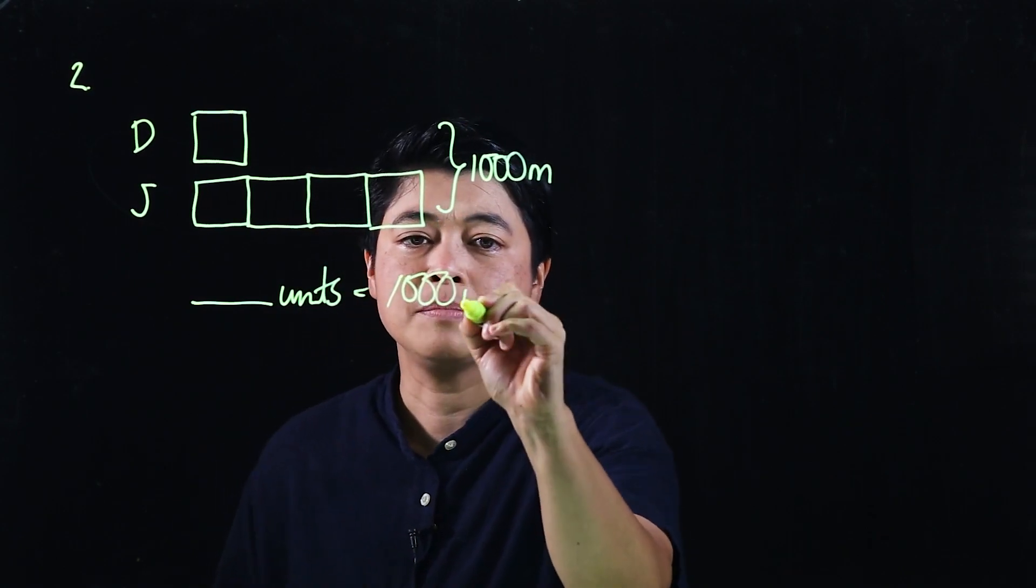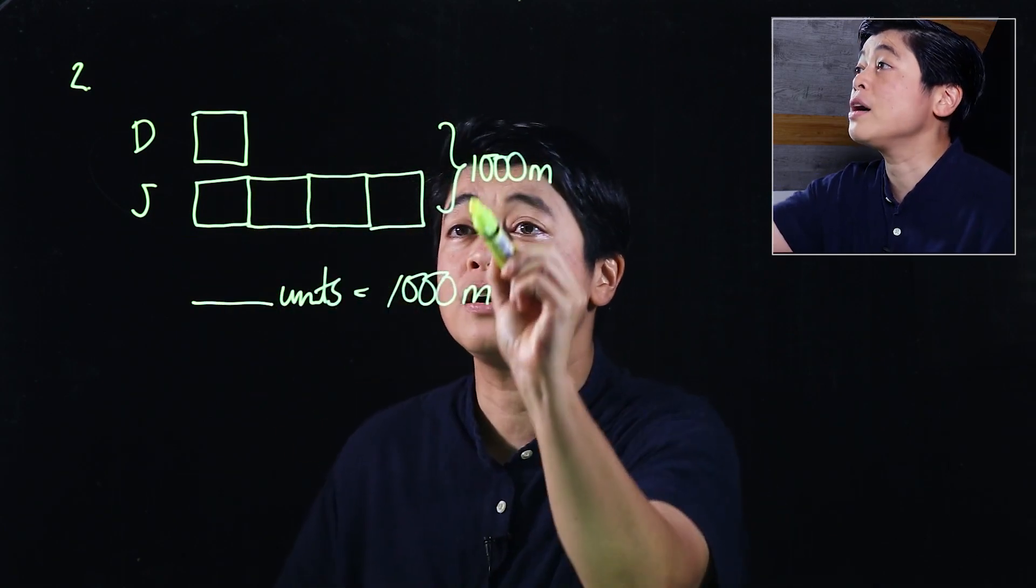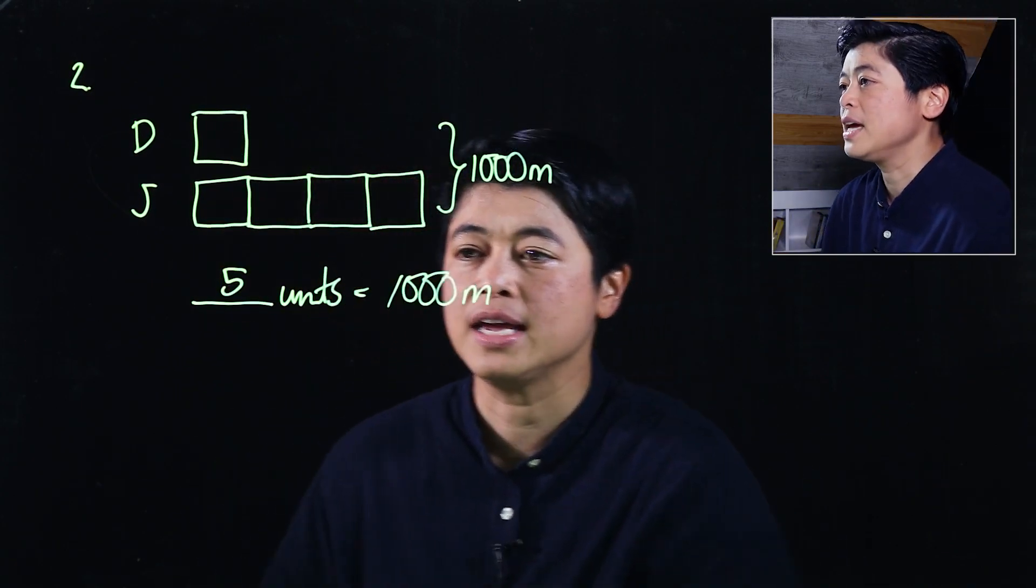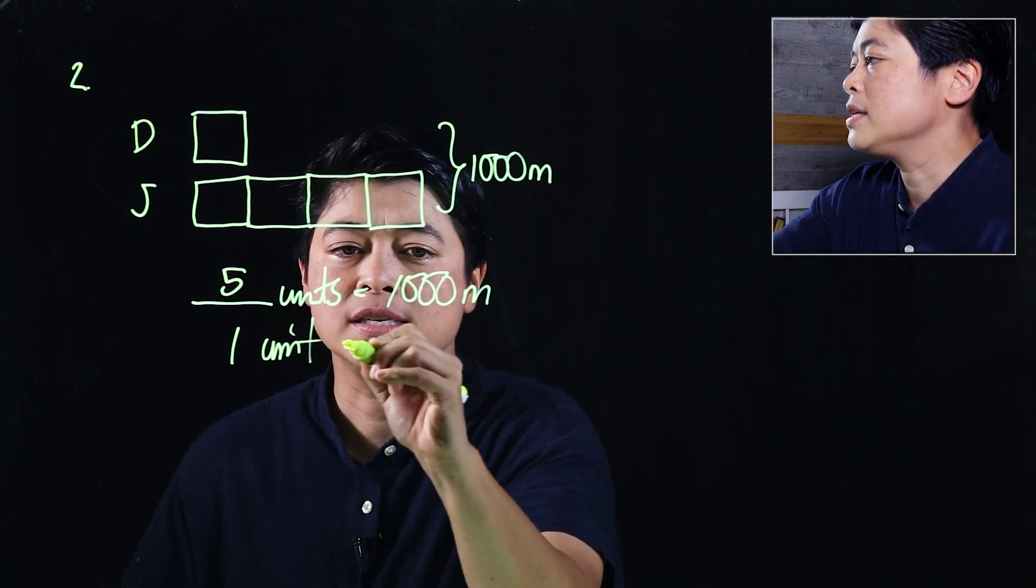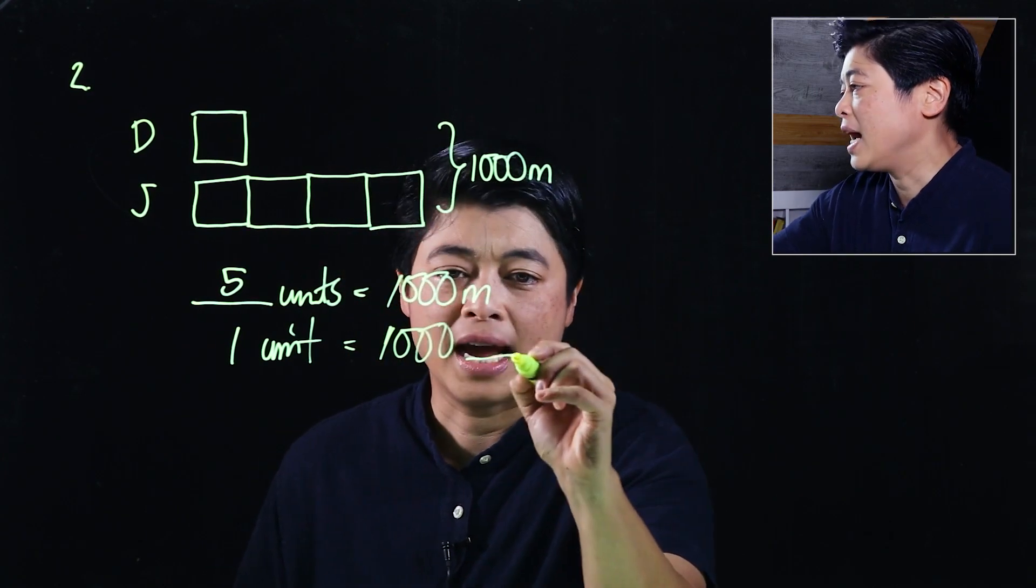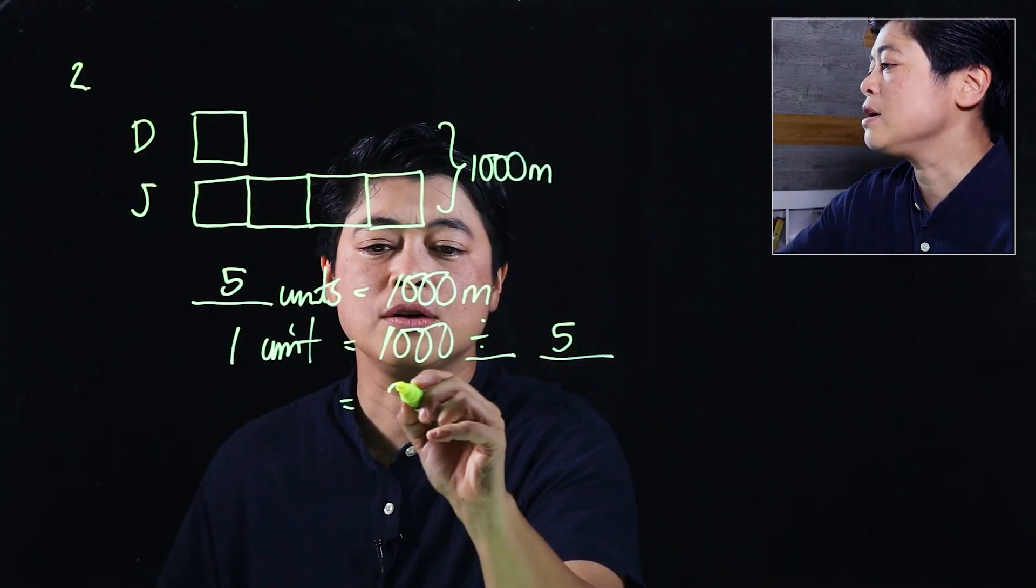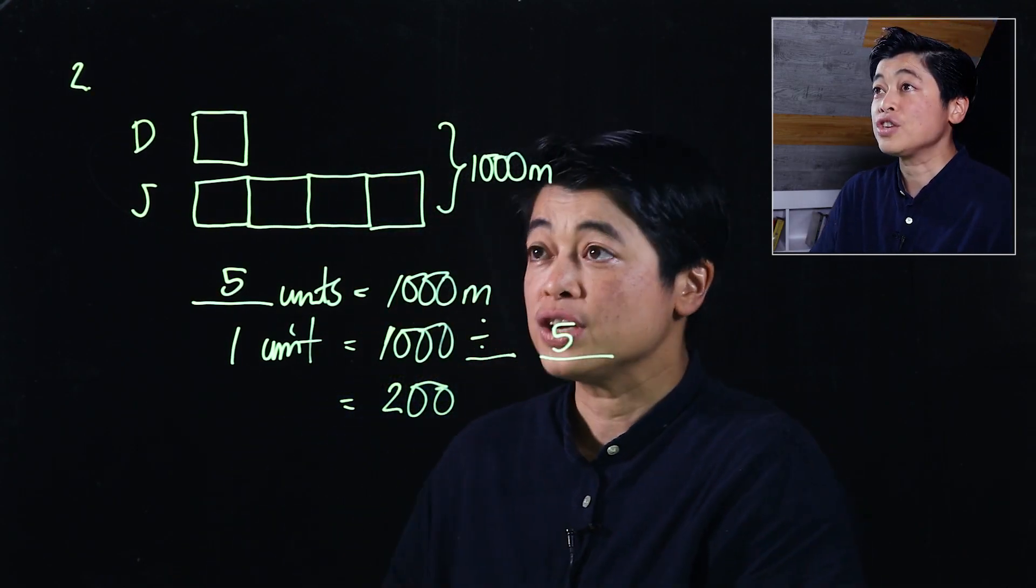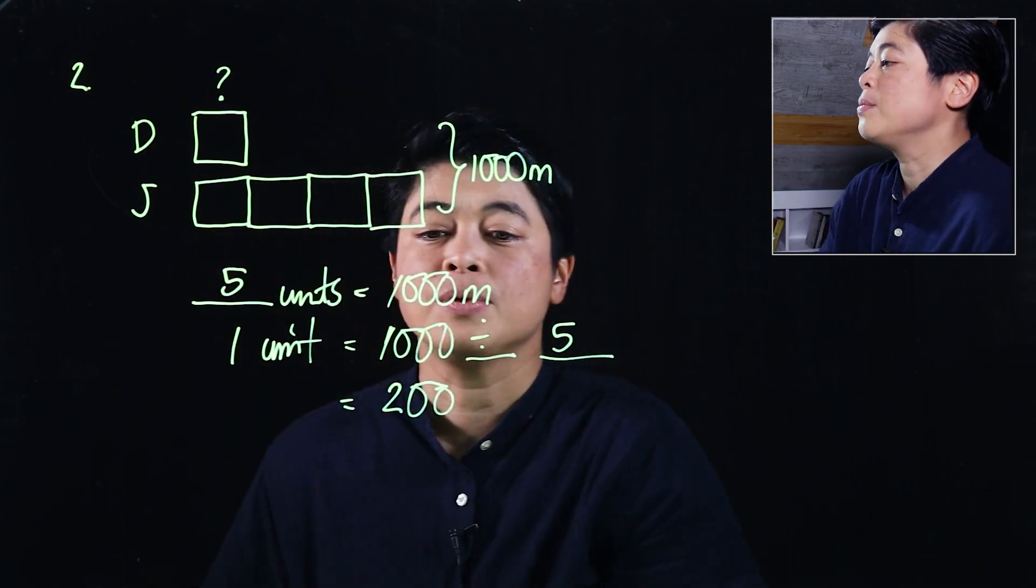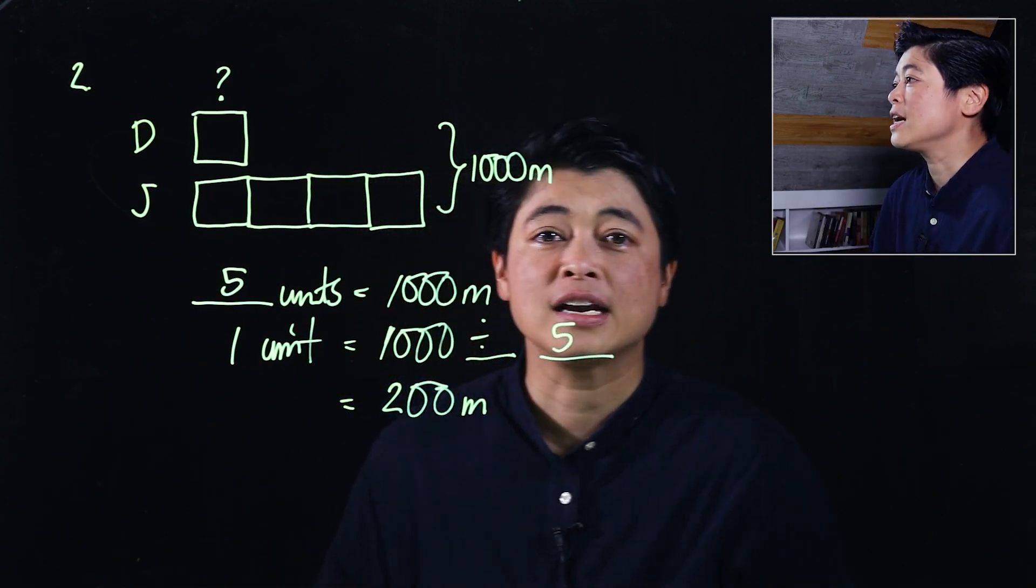The first says blank units equals 1000 meters. They're trying to help the kids be able to visualize. So that means the 1000 is equivalent to 5 units. Then they always will do one unit is equal to 1000 divided by 5. So that means one unit is equal to 200. The question is how far did Darren run. Therefore, Darren ran 200 meters.